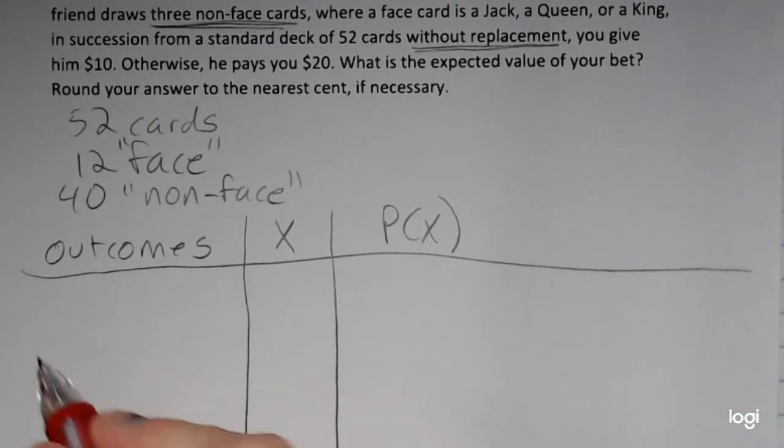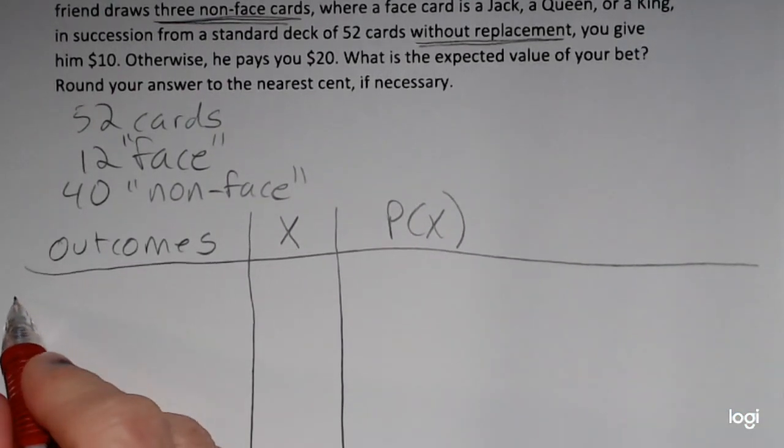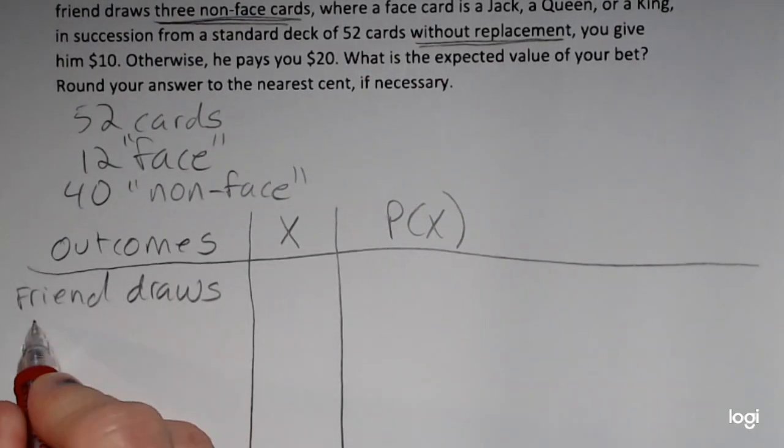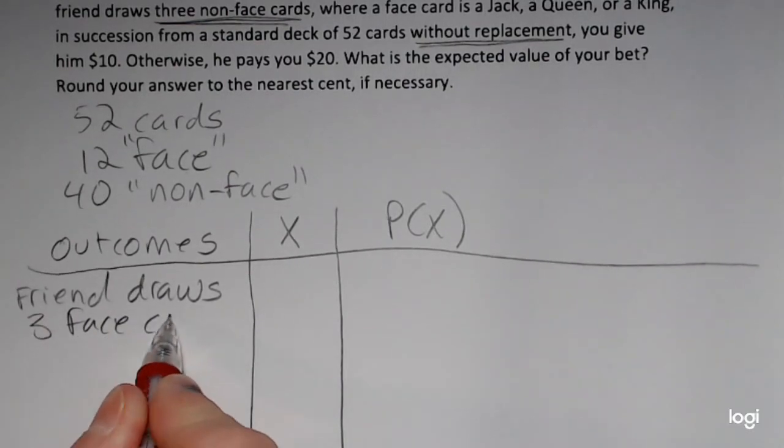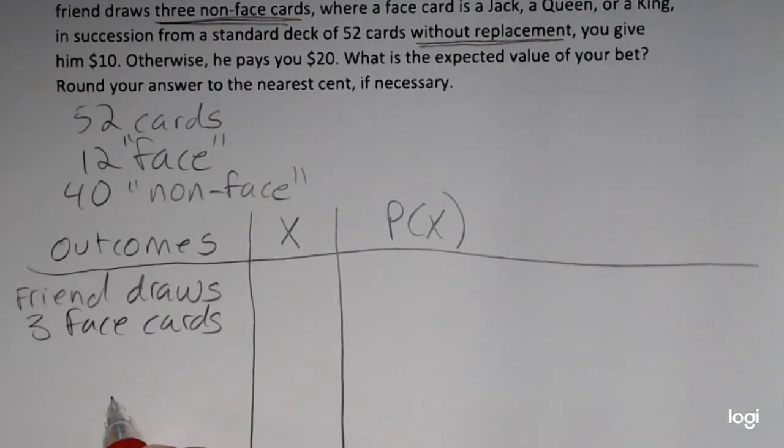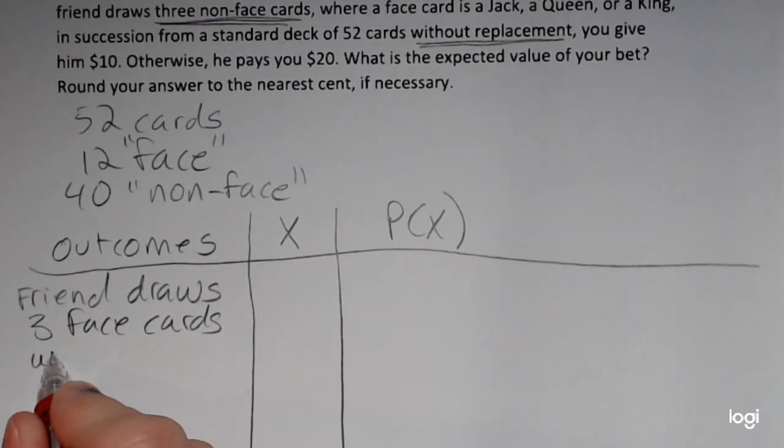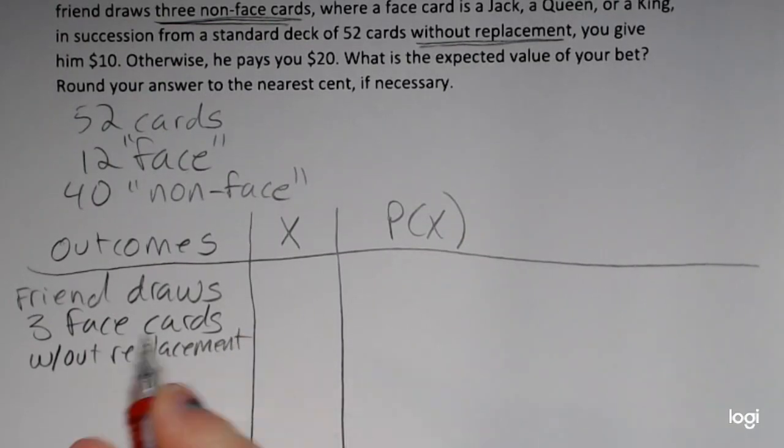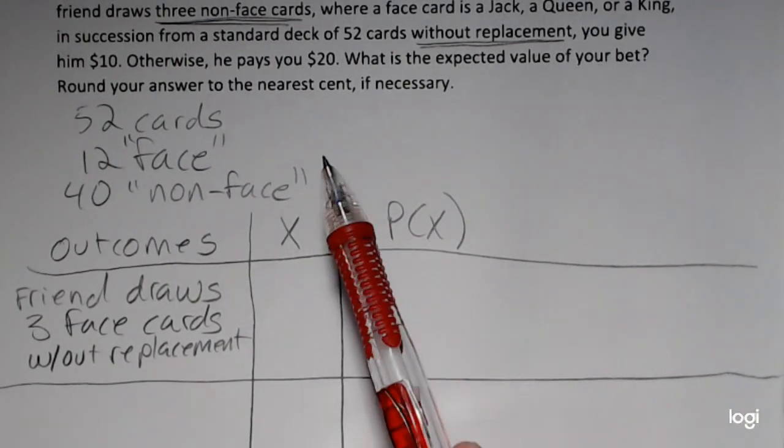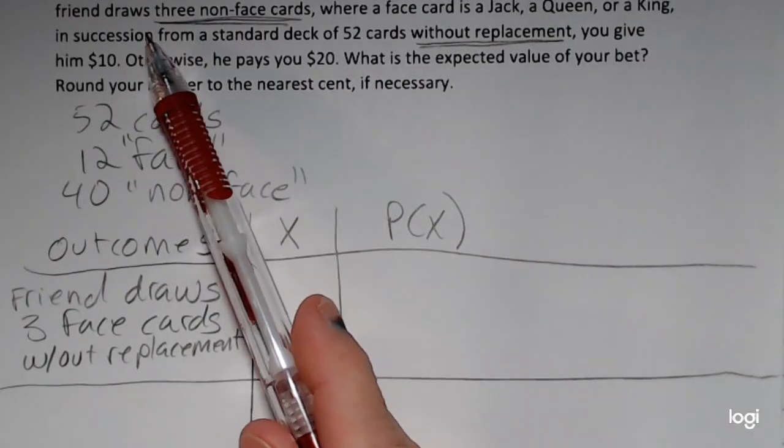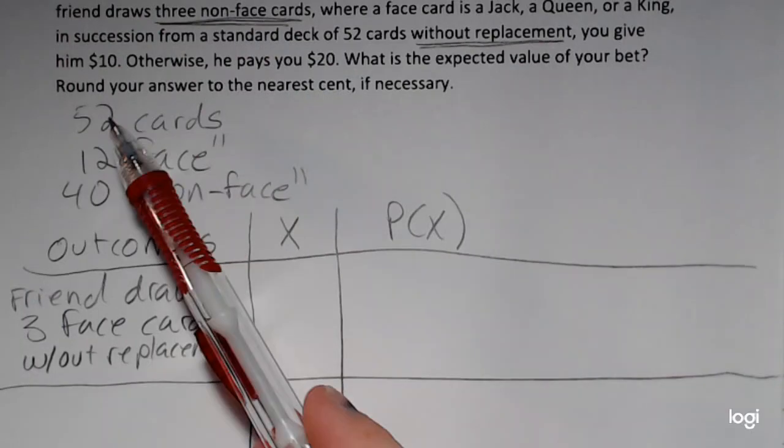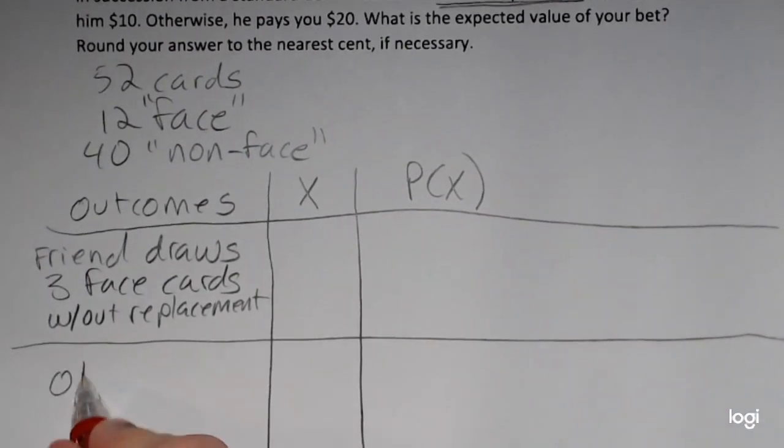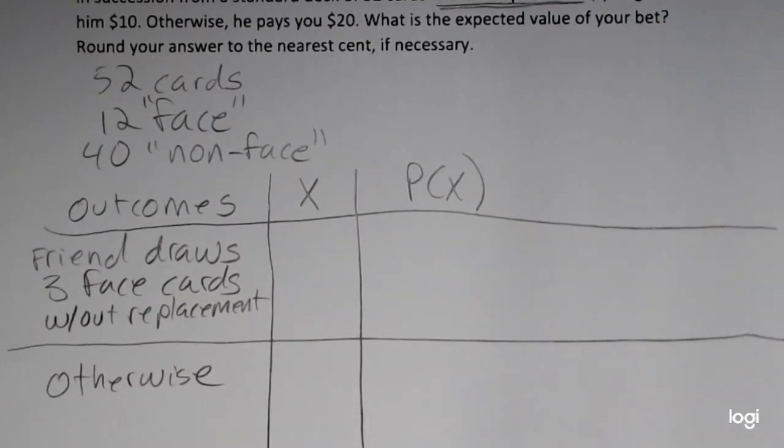In words, we could have the outcome that the friend draws three face cards. And the key thing to keep in mind is without replacement. So we've got basically two events happening. The friend draws three non-face cards or else or otherwise. So I'm going to put otherwise as the second outcome.